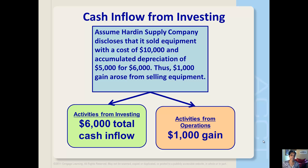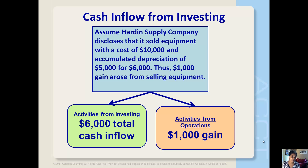Let's take a look at an example. Let's assume that the Hardin Supply Company discloses that it sold equipment with a cost of $10,000 and accumulated depreciation of $5,000 for $6,000.